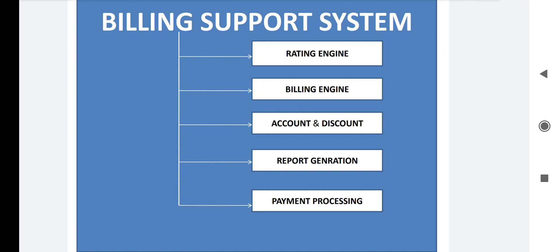We'll first focus on what is meant by the rating engine. As the name suggests, telecom billing means we are generating a bill for whatever usage is there for telecom-related services or plans. In telecom, each and every service is known as an event — if you make a call it's one event, if you send an SMS it's one event, if you are using internet data it's also one event. This rating engine is used to decide the rate.